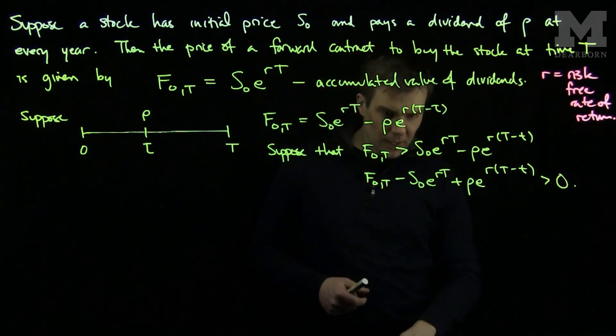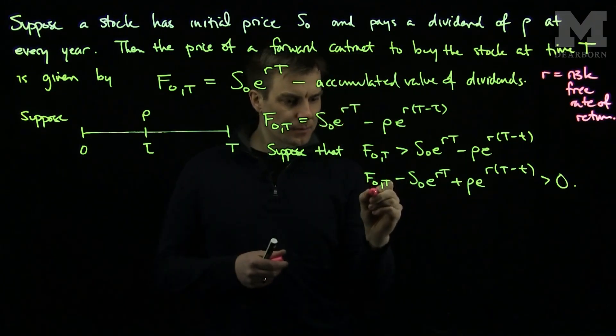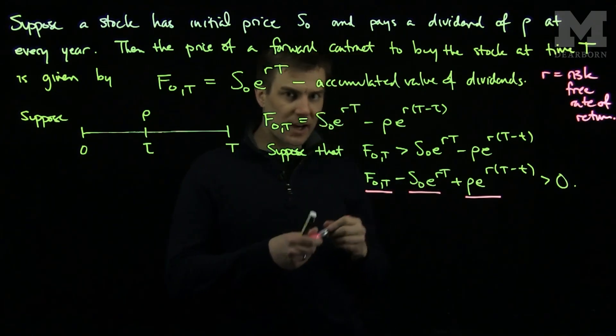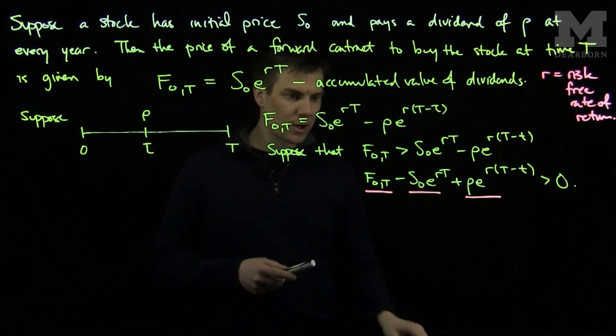What we'll do is we will observe the signs. This is a positive sign, this is a positive sign, and this is a negative sign, and that tells us how to follow the arbitrage structure.